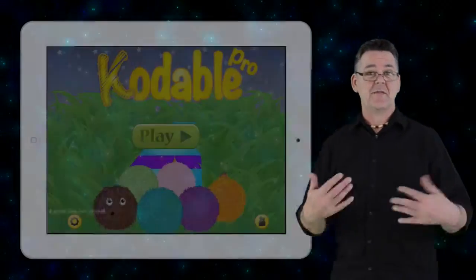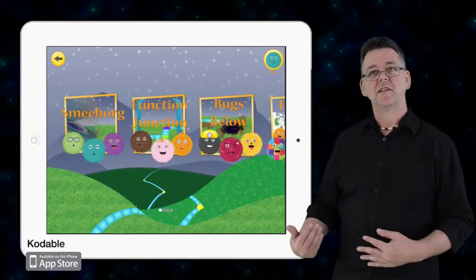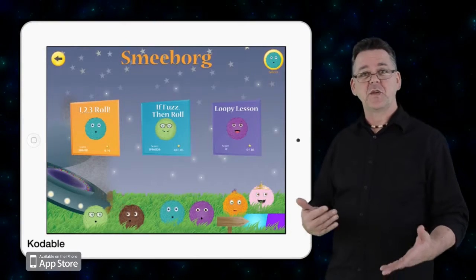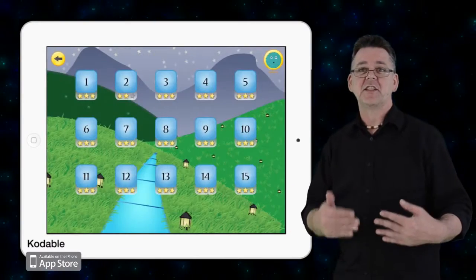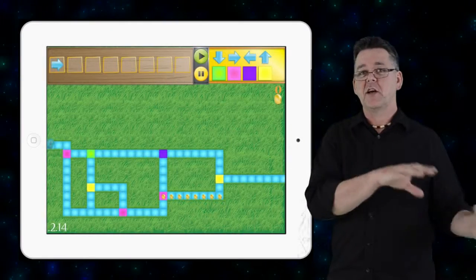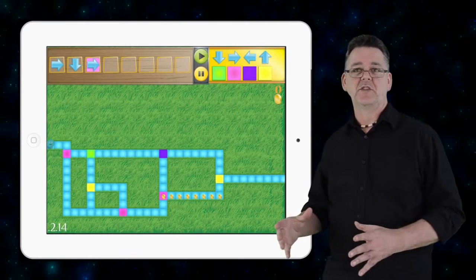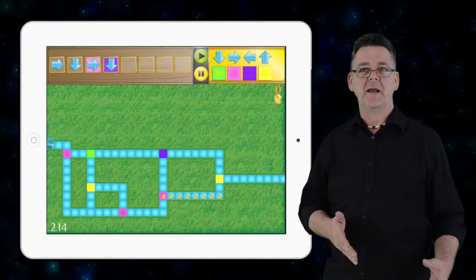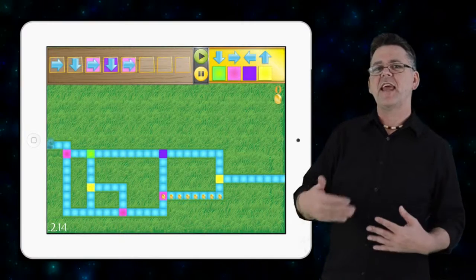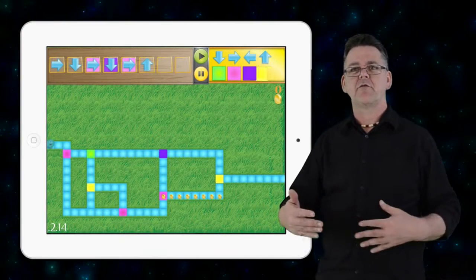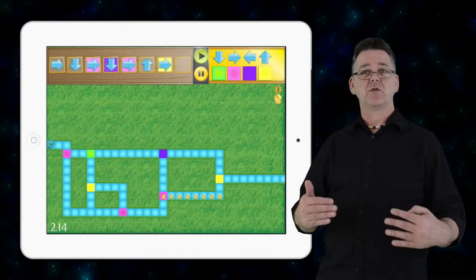Now taking this idea a step further is Codable. And this game presents students with a similar series of challenges to sequence their way through maze-like pathways. However, Codable introduces additional coding concepts such as branching and looping. And these ideas of if-then decision making and iterative repetition are fundamental to creating code.